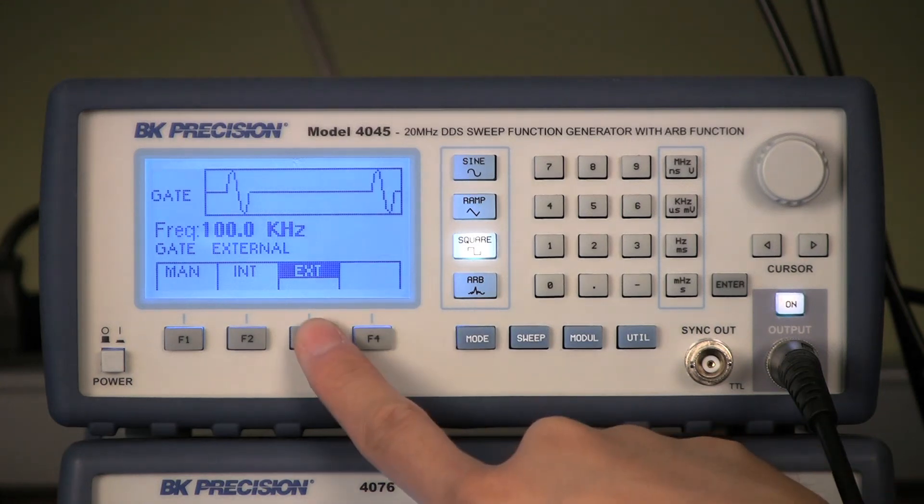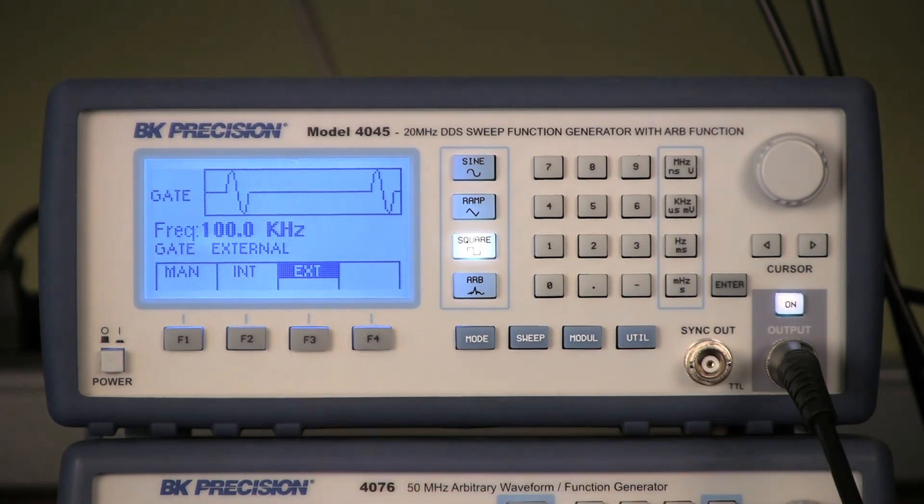Select EXT from the menu so that the generator will use the triggered input from the rear panel to trigger the main output clock signal that we have just set up.